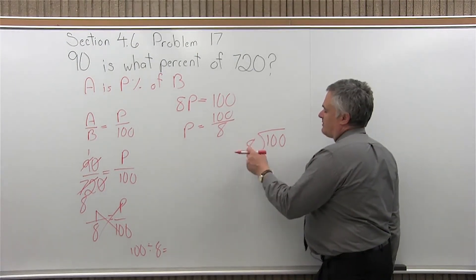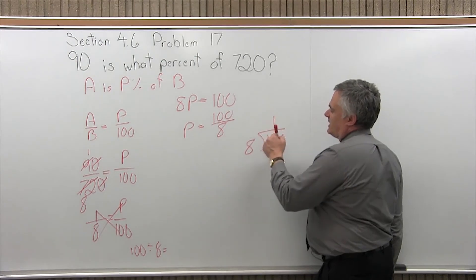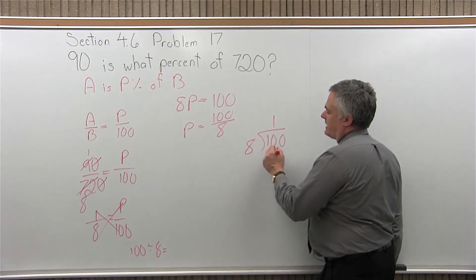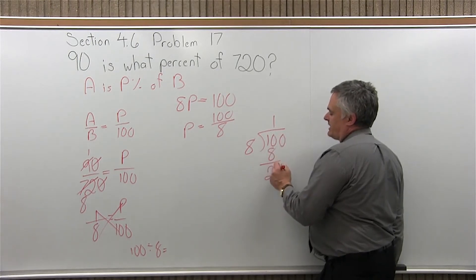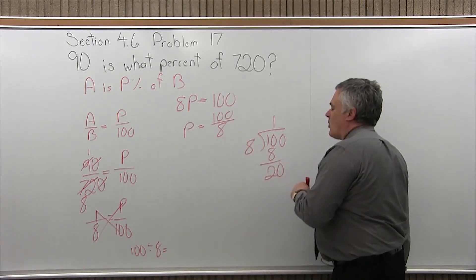8 divides into 1. 1's not big enough. So, I'll go out one more. 8 divides into 10. That'll fit. 8 goes into 10 once. 1 times 8 is 8. 10 minus 8 is 2. Bring down the next digit, which is 0.